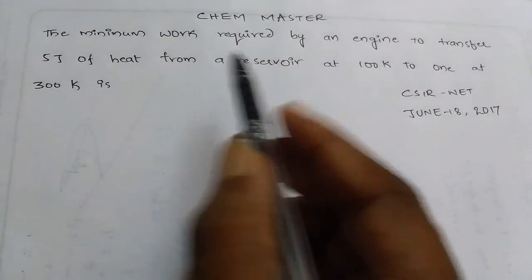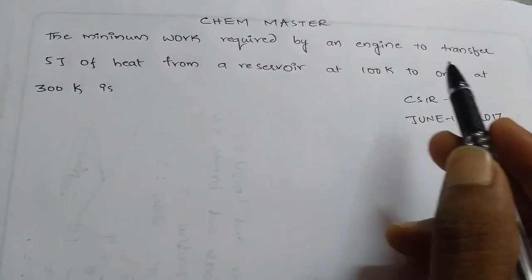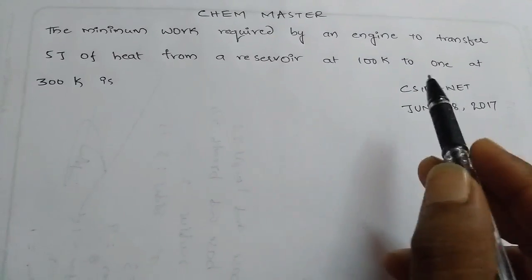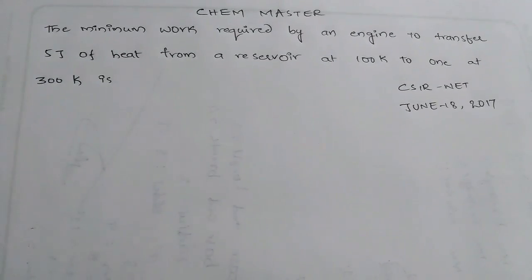The question is: the minimum work required by an engine to transfer 5 joules of heat from a reservoir at 100 Kelvin to one at 300 Kelvin.